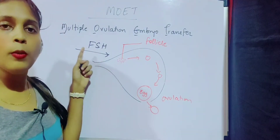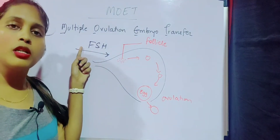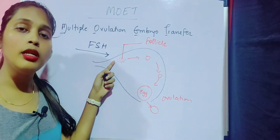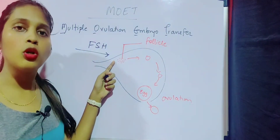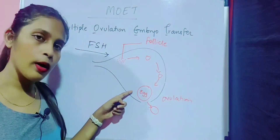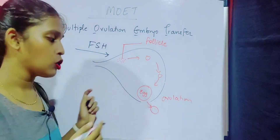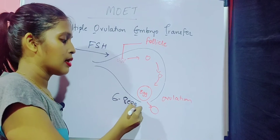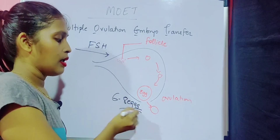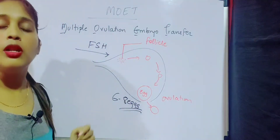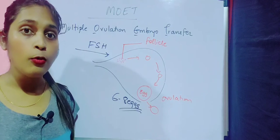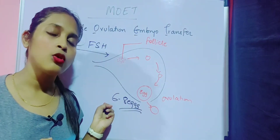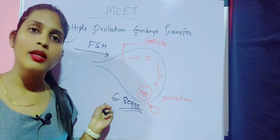If this particular female is given a hormonal injection of FSH — that is Follicle Stimulating Hormone — this injection helps to induce the production of more eggs. Rather than one egg, there will be a production of around six to eight eggs taking place in that particular female.